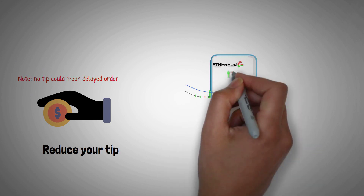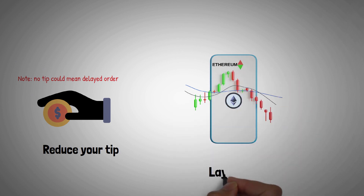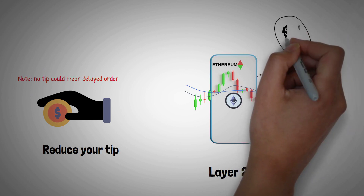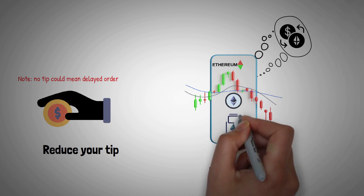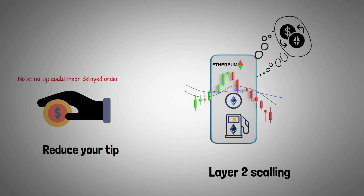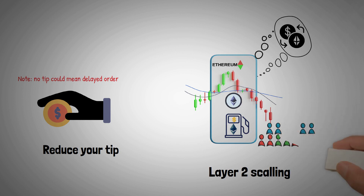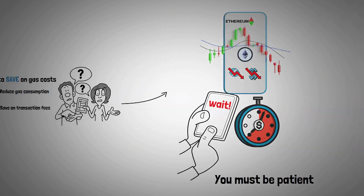Lastly, there is the Layer 2 scaling option. Ethereum has been searching for solutions to improve scalability and reduce transaction time. Layer 2 scaling solutions allow for transactions to take place off-chain, meaning outside of the Ethereum network. The transaction is then added back to the network to be validated, so less gas is required. Layer 2 scaling reduces gas fees for the transactions it handles, but it also reduces the amount of traffic on the Ethereum network, leading to lower base fees for all users.